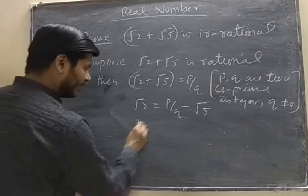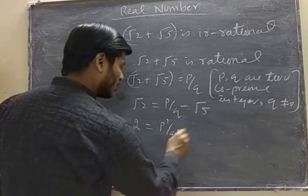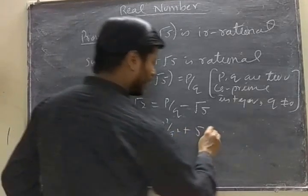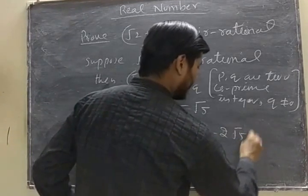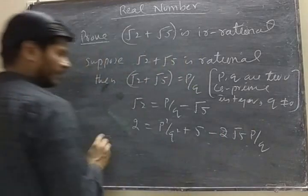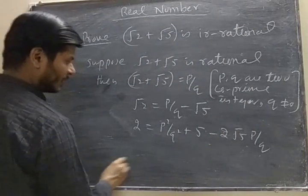Squaring on both sides. When we square, we get A square plus B square plus 2AB. This is how we solve the problem.